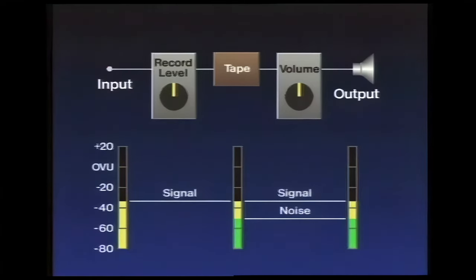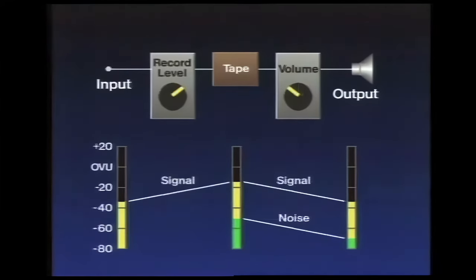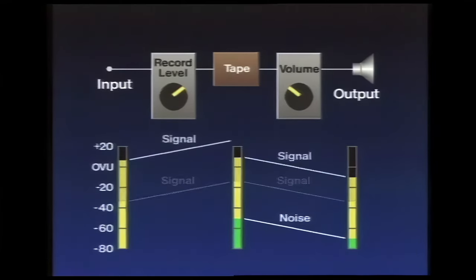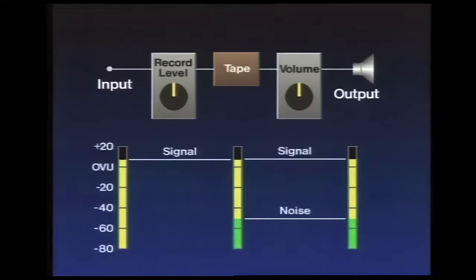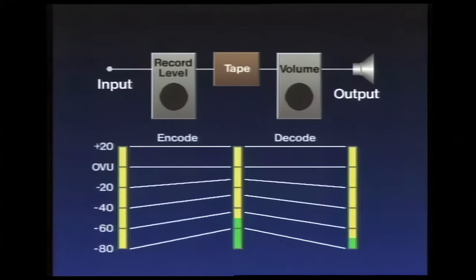A simple way to improve results is to record the music at a higher level, so it's above the noise. When we play the tape and reduce the volume to its original loudness, the noise will reduce by a similar amount. Very effective, until a loud part comes along. Now we're back where we started.